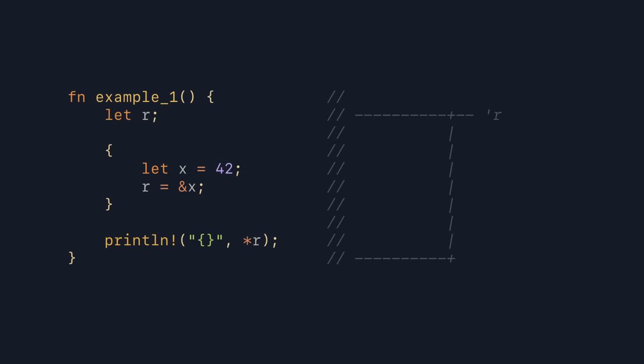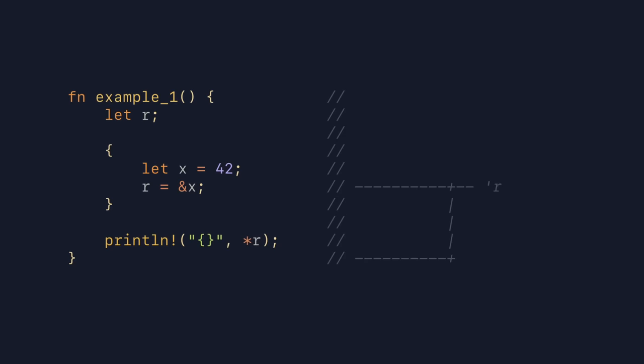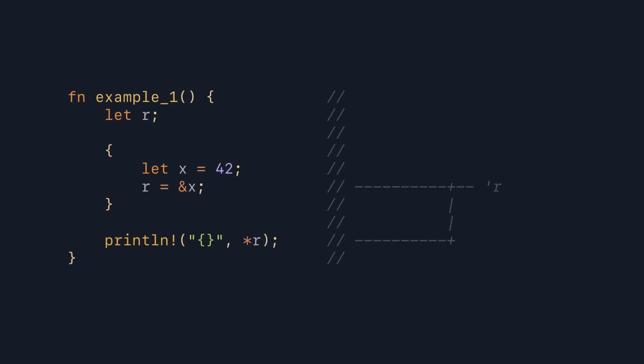And even though r is a reference, the region of code 'r does not actually specify where the reference r must be valid. Intuitively, that wouldn't make any sense, because up here r isn't even initialized, so r's lifetime cannot start before this assignment. And then after the print, we don't actually need r to be valid anymore, because it's not used there. So in fact, this is what r's lifetime actually looks like. r's lifetime crosses the closing curly brace of the inner block where x goes out of scope, and because r points to x, that is not allowed. If we remove the print again, r's lifetime collapses because r isn't used anymore, and because its lifetime no longer crosses the closing curly brace, this code is now valid.